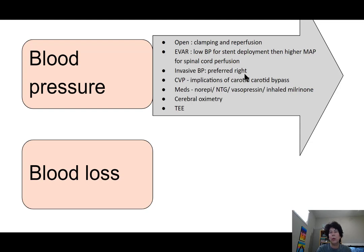For monitoring, we almost always use invasive blood pressure — we prefer the right side, because if they work on the left subclavian or carotids, our right-side pressure will not be as affected. We want central venous access for inotrope supplementation. We will have a variety of medications ready to treat low and high blood pressures: norepinephrine is a very standard drug, and then for the opens, maybe nitroglycerin or nitroprusside, plus or minus vasopressin or inhaled milrinone for reperfusion on the big open cases.